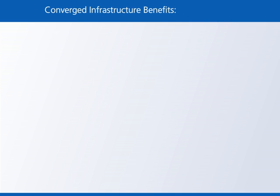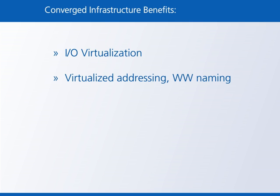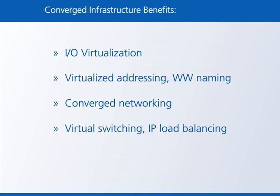In summary, the benefits of using converged infrastructure are: using I.O. virtualization, you need to purchase far fewer I.O. devices and cables. Virtualized addressing and worldwide naming vastly simplifies server repurposing. Converged networking yields a wire-once infrastructure that you never recable. Virtual switching and virtual load balancing permit infinite configuration possibilities. And virtual storage connectivity easily lets you connect any LUN to any server. Most of all, it's a single integrated management system and not a bundle of separate tools needing integration.